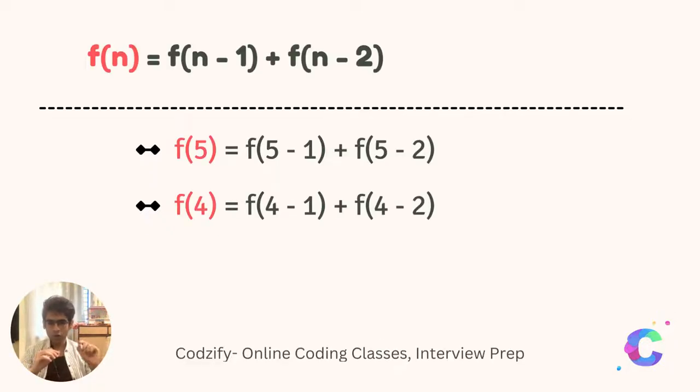So for f of five, the function will return f of five minus one, which is n minus one, and f of n minus two, which is five minus two.